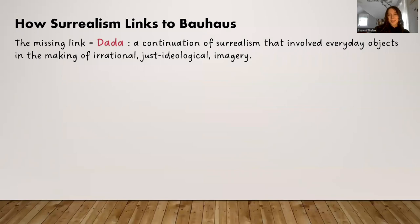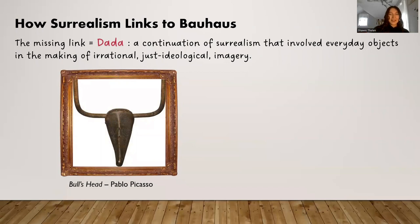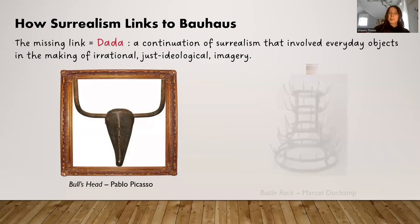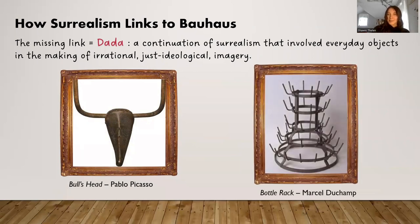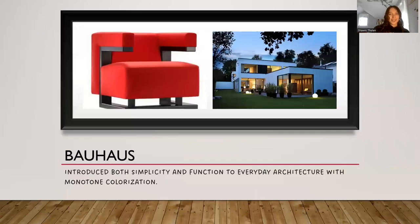Going into Bauhaus, there was a link in between there called Dada. Dada was an art movement that took everyday objects and made an irrational, ideological imagery out of them. Below, we can see The Bull's Head by Pablo Picasso. If you look close enough, you can tell that this is a bicycle seat with handlebars, but he looks at this and sees a bull's head. This links back to that surrealistic imagery. Moving forward, we get a little bit of function into these designs, as you can see by the drying bottle rack. This function leads greatly into Bauhaus.